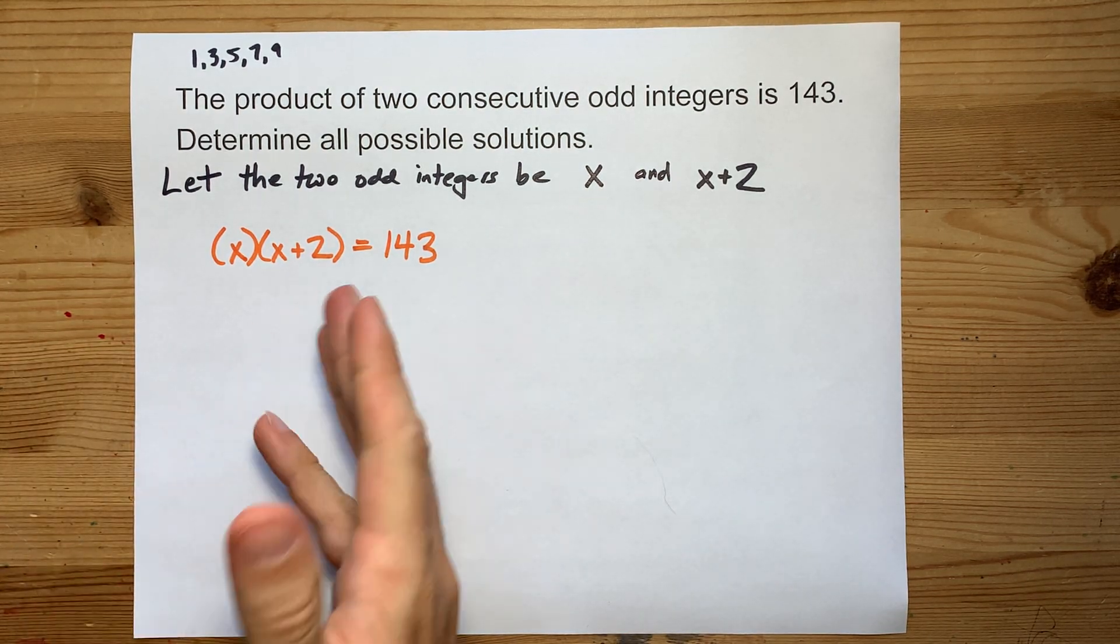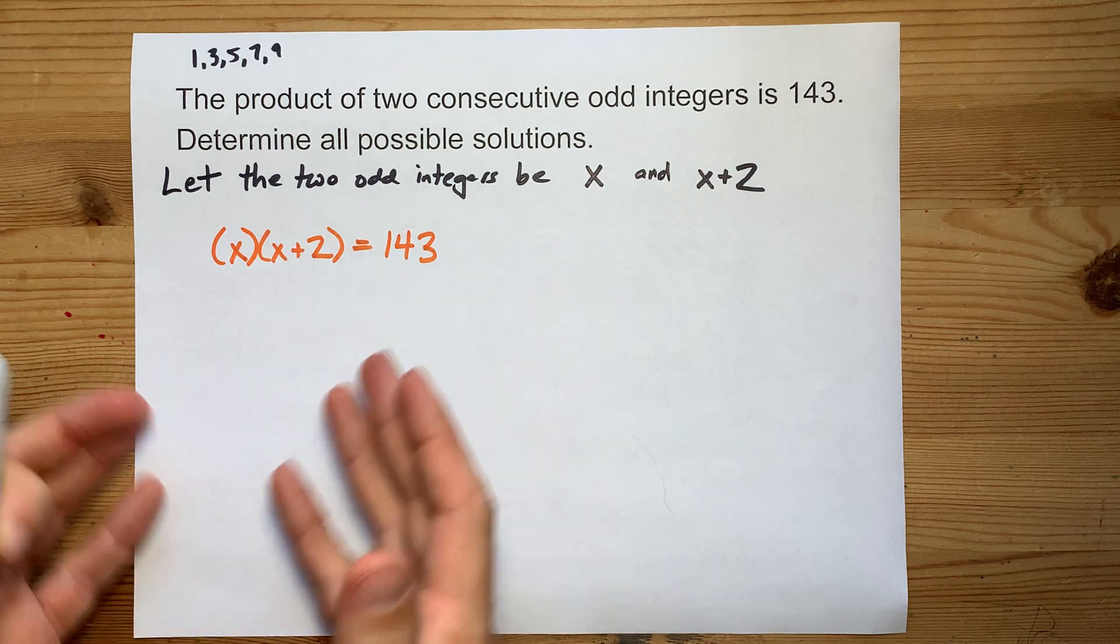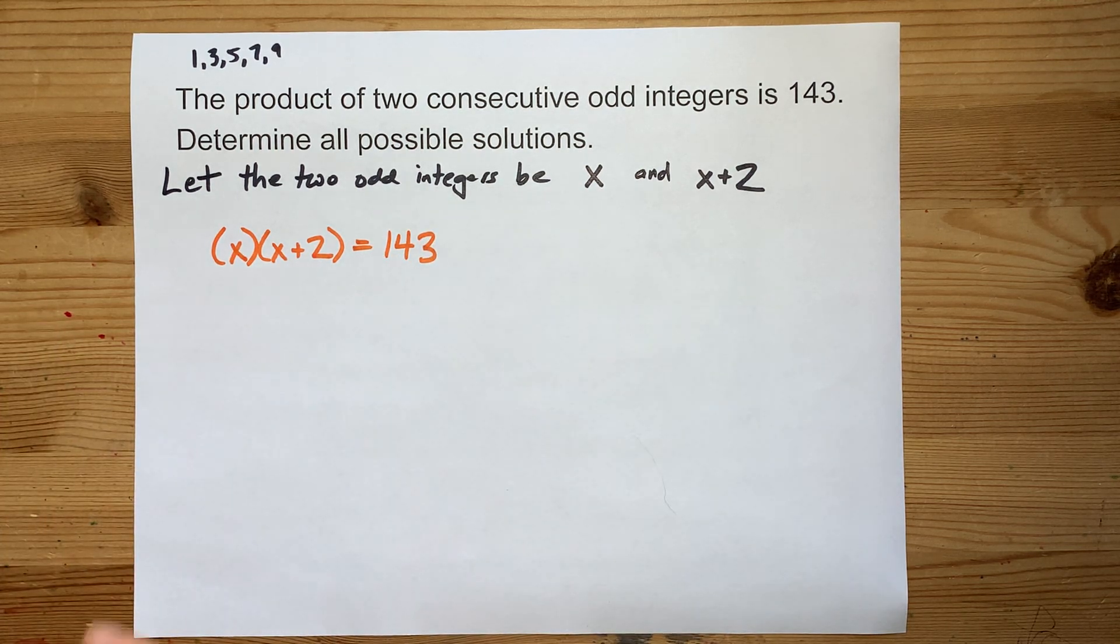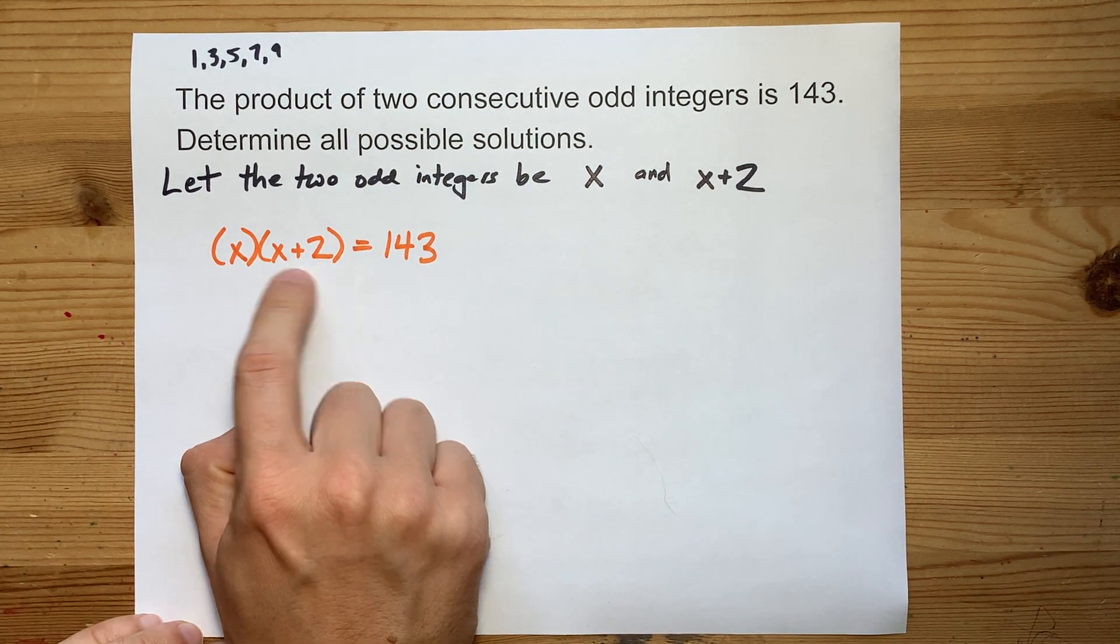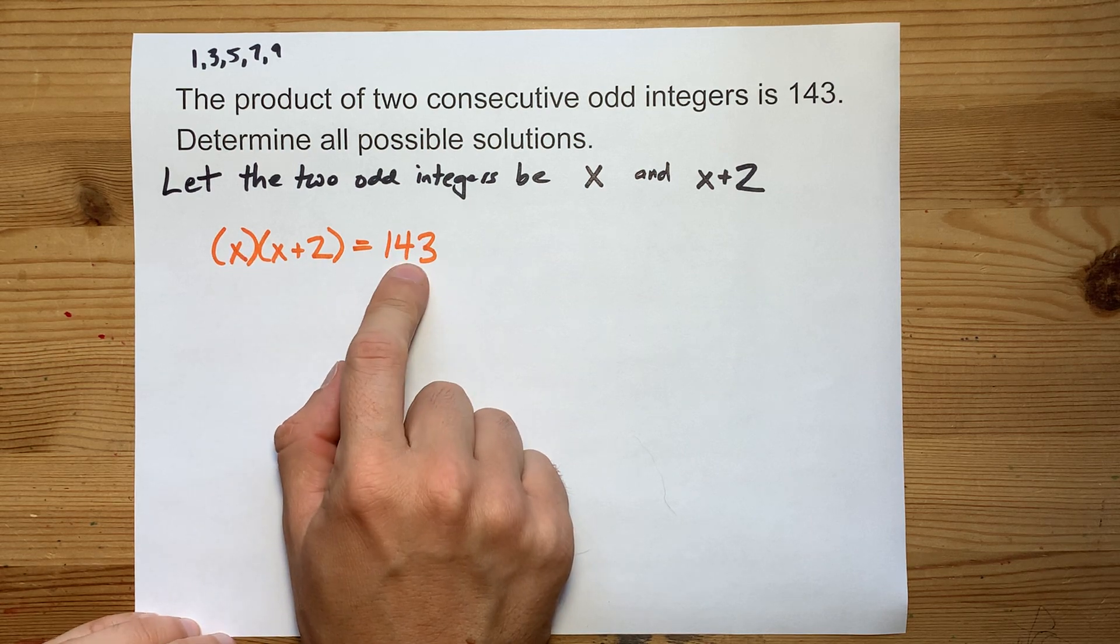Now, that's going to be easier or tougher said than done. I think you should get rid of these brackets. Multiply everything out and make one side zero.